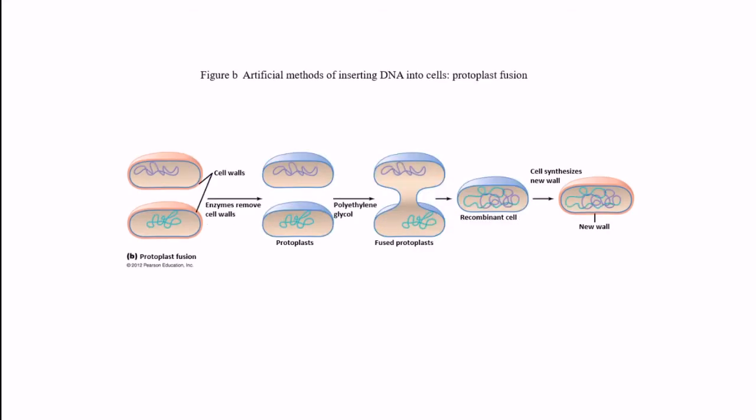Next is protoplast fusion. What is a protoplast? A protoplast is a plant cell without its cell wall. First we remove the cell wall from the plant using enzymes like cellulase. Further, PEG (polyethylene glycol) is added which helps in the fusion of the protoplast, joining the two cell membranes.